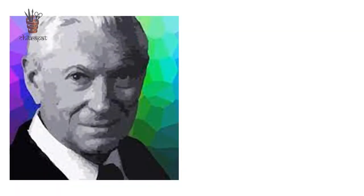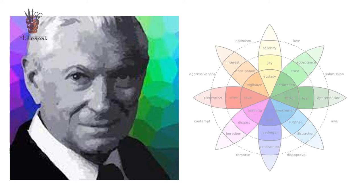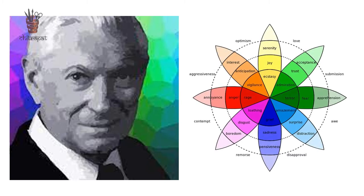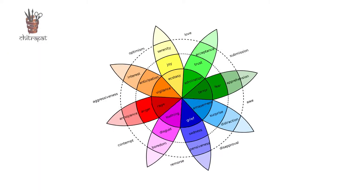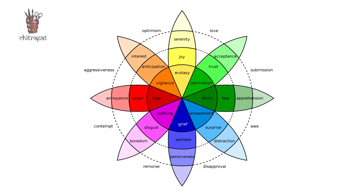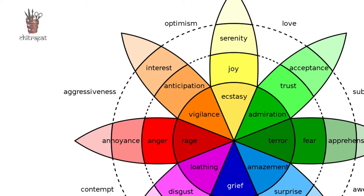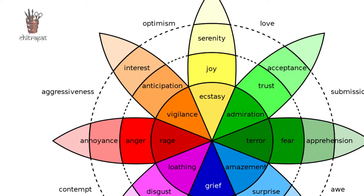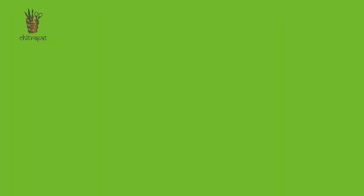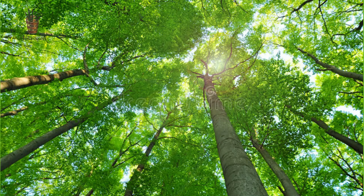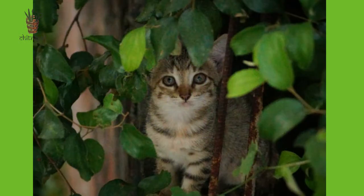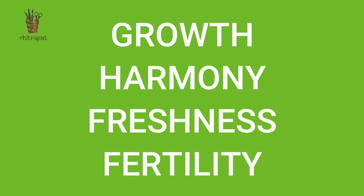Dr. Robert Lokche created a wheel of emotion to illustrate different emotions with different colors used in visual storytelling. These individual colors have different characteristics. Blue symbolizes trust, loyalty, wisdom, and confidence. Green is the color of nature, symbolizing emotional correspondence with safety, along with growth, harmony, freshness, and fertility.